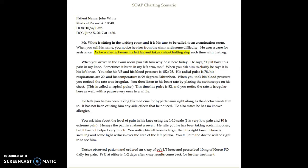You take his vital signs: his blood pressure is 152 over 98, his radial pulse is 78, and his respirations are 20. His temperature is 99 degrees Fahrenheit. This is objective data. When you look at his blood pressure, you notice that the rate was irregular. You then listen to his heart rate by placing the stethoscope on his chest — this is called an apical pulse. His pulse was 82, and you notice that the heart rate is irregular here as well.